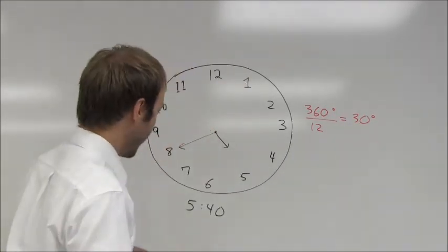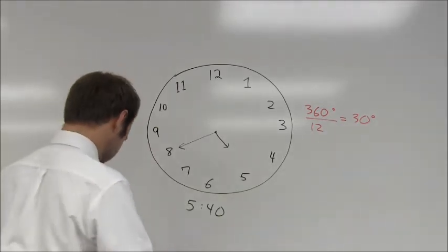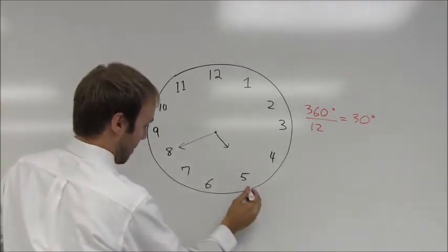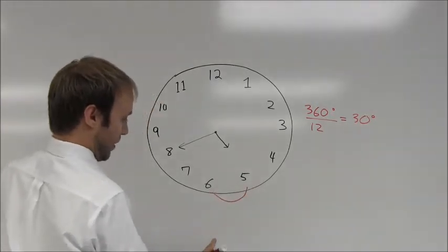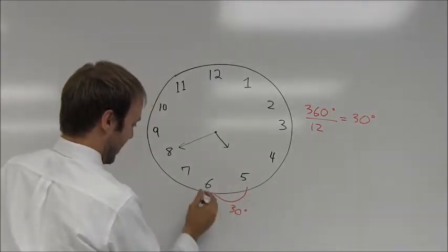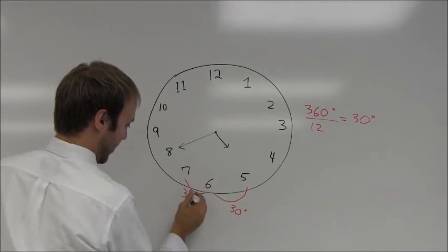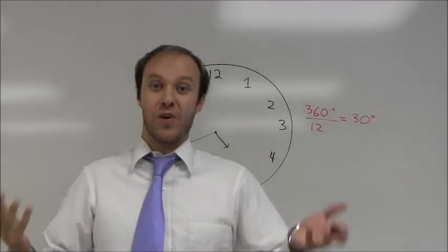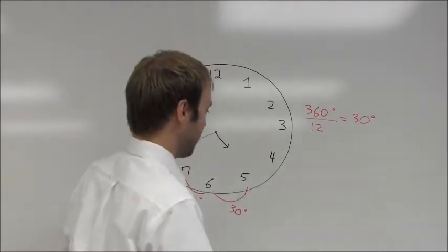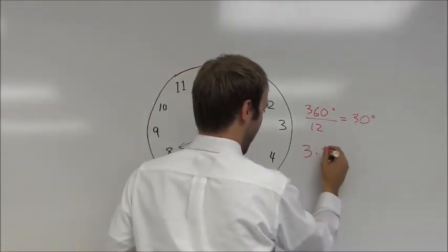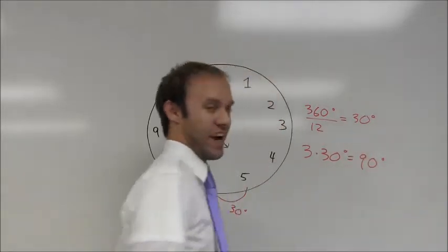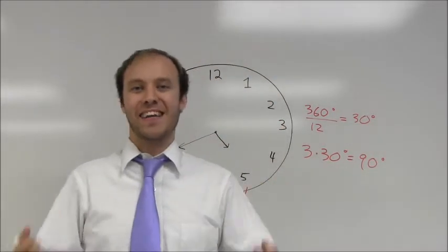So from a starting point, I can go ahead and label each of these angles here. And you can see that this interval here is 30 degrees. The second one is 30 degrees. The third one is 30 degrees. Or you could say that I have three times 30 degrees, which is equal to 90 degrees. However, I'm not done.